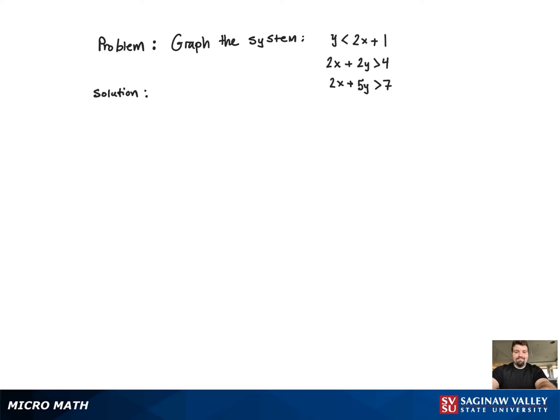We're going to start this problem by graphing the first inequality. To do that, we need to change it from an inequality to an equation and graph the line. Since it's in slope-intercept form, we know the y-intercept and can use the slope to find a second point.